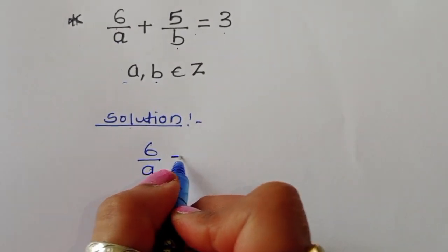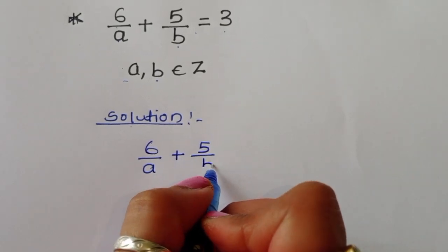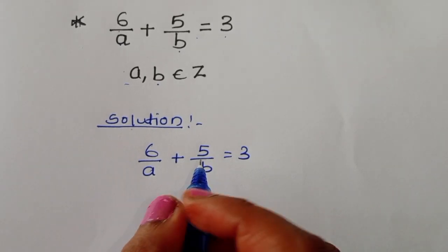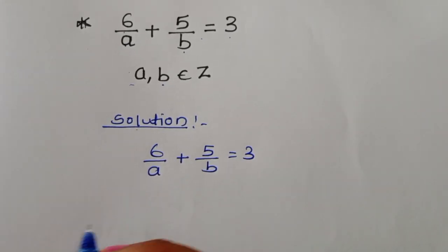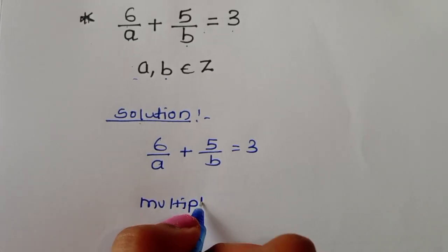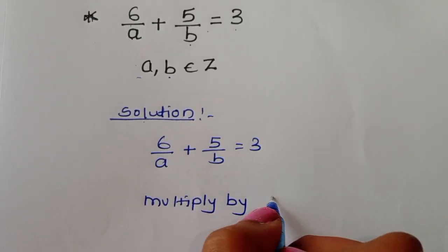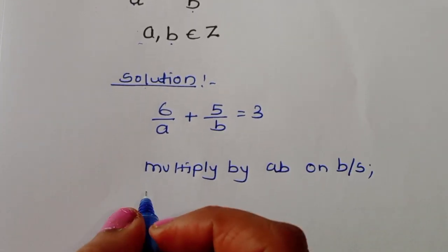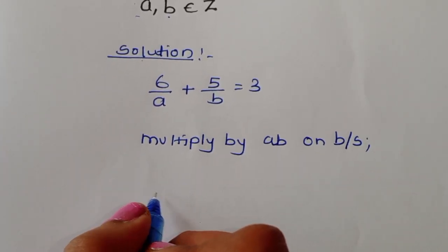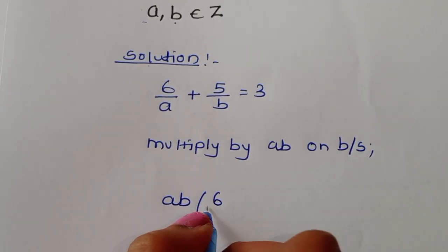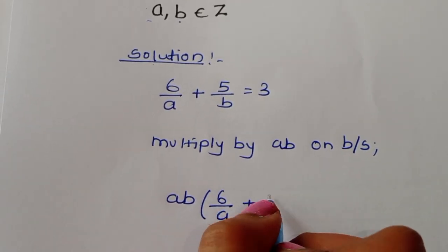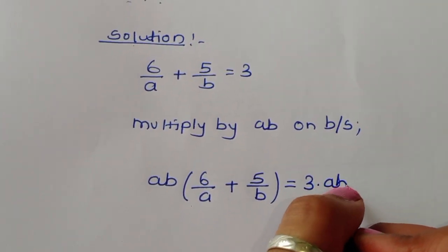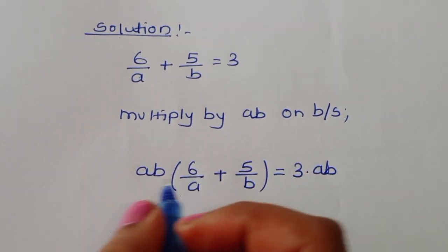We have 6/a + 5/b = 3. One thing we can do is multiply both sides by ab. So ab times (6/a + 5/b) is equal to 3 times ab.